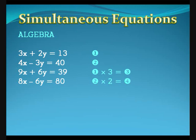Multiply equation 1 by 3, and equation 2 by 2. Call these equations 3 and 4. Add equations 3 and 4, so 17x is 119, and x equals 7.